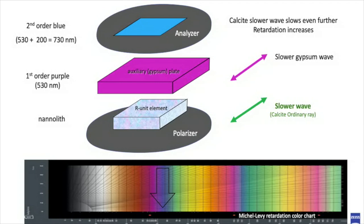The retardation of the gypsum plate, 530 nm, plus the original retardation of the calcite crystal, 200 nm, equals to 730 nm.